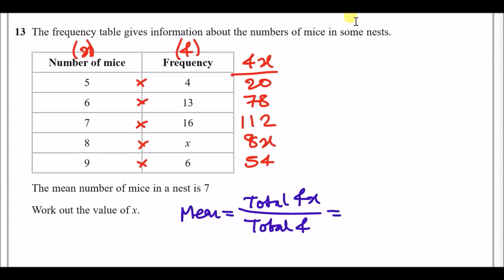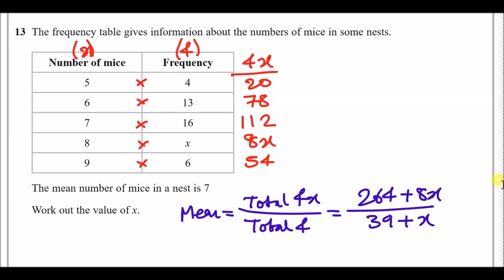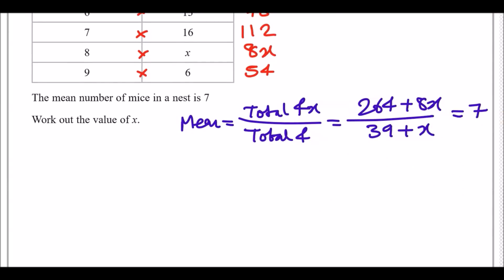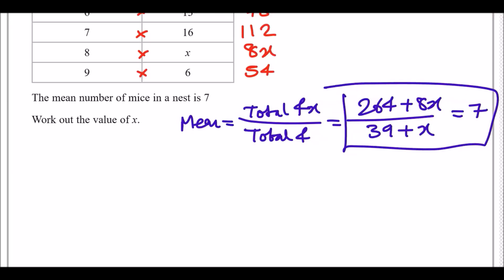Adding up all the fx terms gives 264 plus 8x, and the total frequency adds up to 39 plus x. We know the mean is supposed to equal seven, so now we solve this equation to find the value of x.